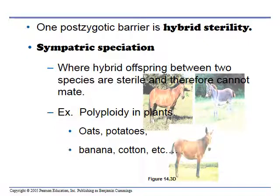Hybrid sterility is postzygotic — the mule cannot mate with other mules and have babies. There's also something called a polyploid plant. Most things are diploid, so the gametes are haploid. But strawberries, for example, are octoploid — they have eight sets of chromosomes, which occurs by an accident in meiosis and creates a new species.